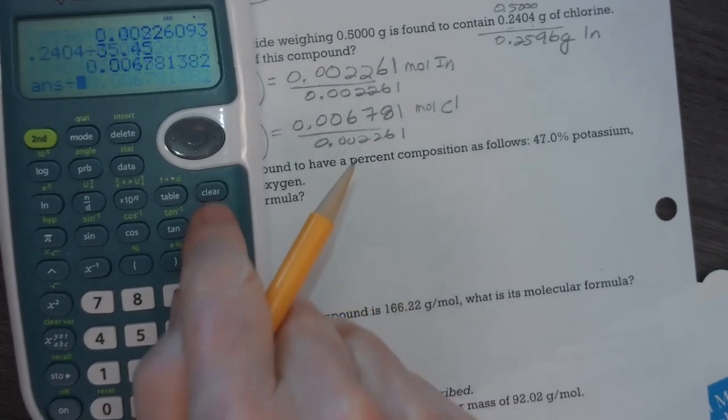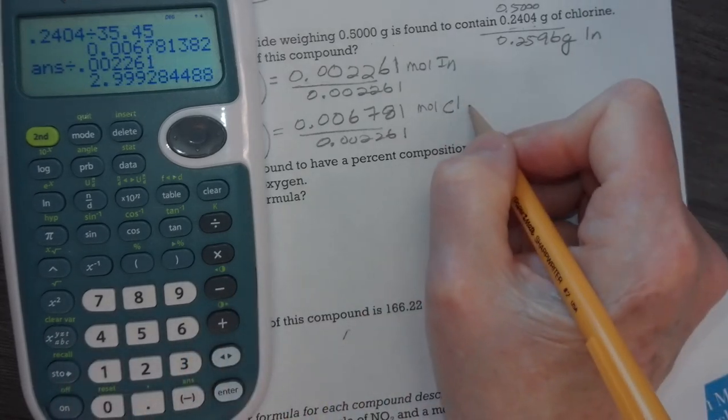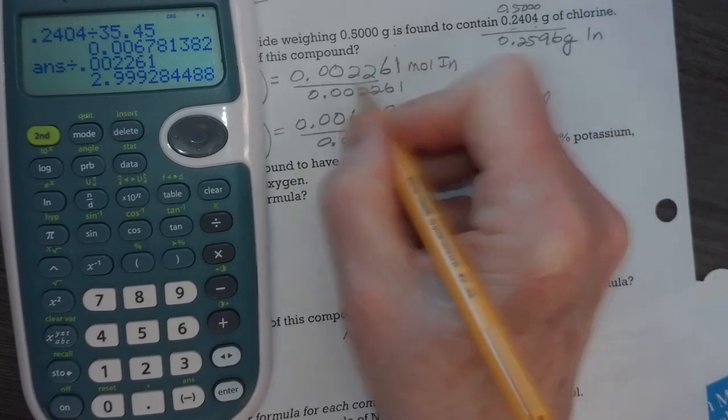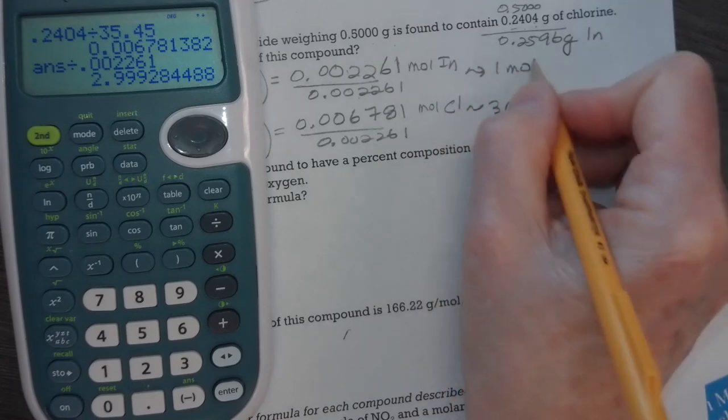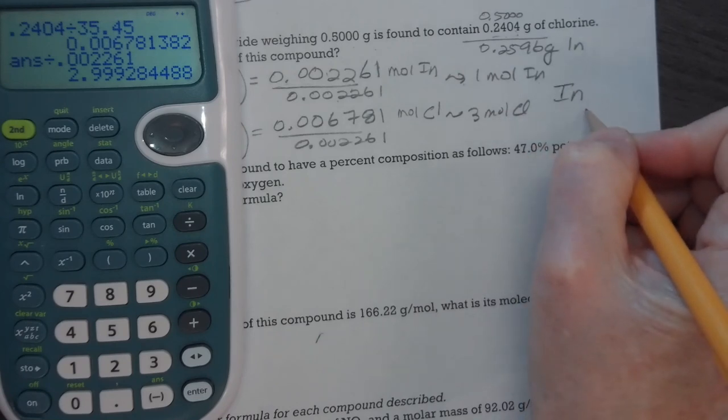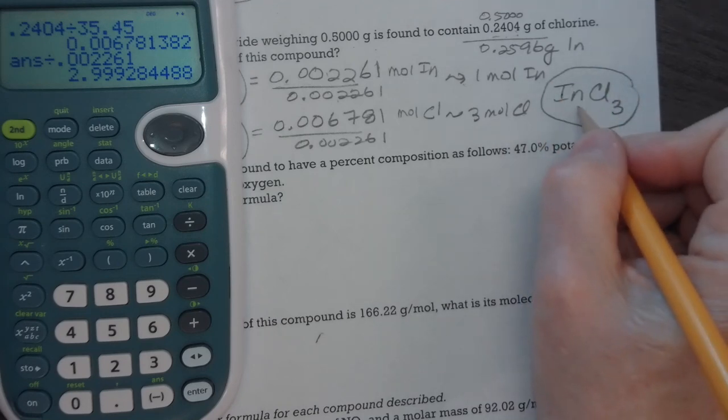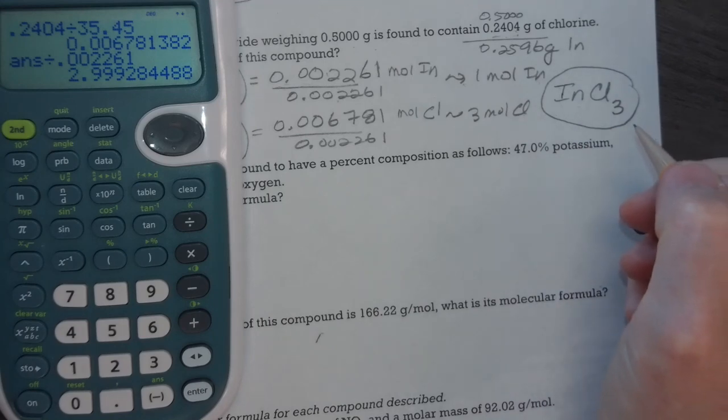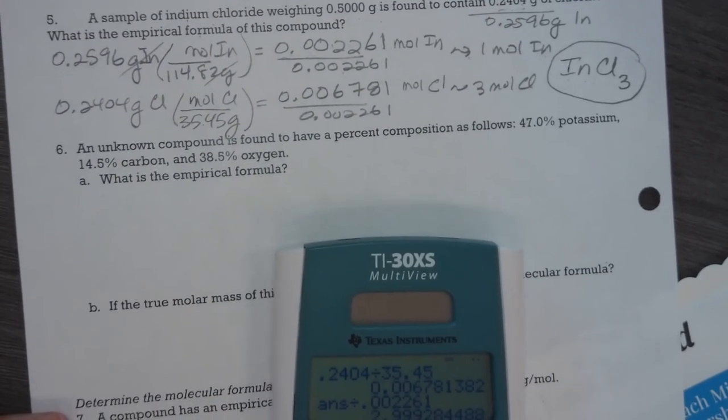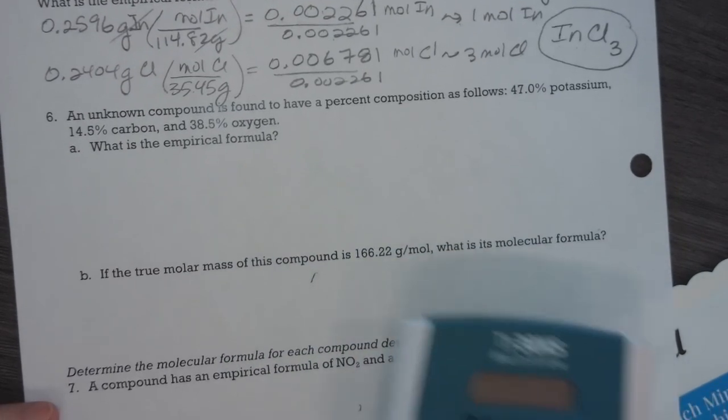Since I've just done this, I'm going to divide this by 0.002261. And I get approximately 2.9999, which is approximately 3 moles of chlorine. And I know this is going to be 1 mole of indium. So 1 mole of indium means my subscript for indium is a 1, which I don't need to put. My subscript for chlorine is 3. So this would be indium chloride. And that's at least the empirical formula. It's probably that ionic compound, indium trichloride.